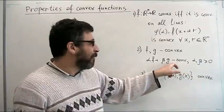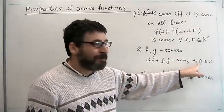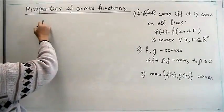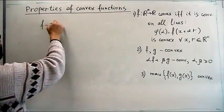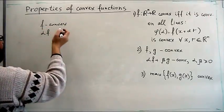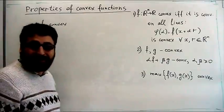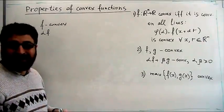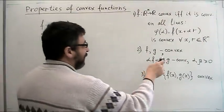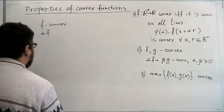Another basic and important property: a weighted sum of convex functions is convex for non-negative weights. If f is convex but alpha is negative, then alpha·f is not convex — it is concave. So we really need alpha greater or equal to zero.